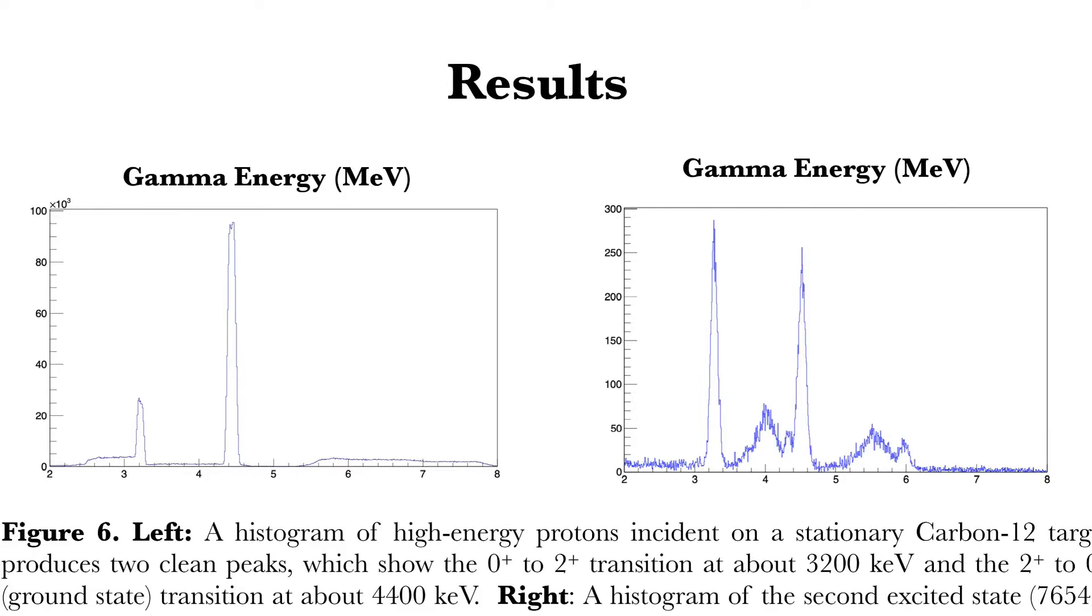As you can see, both graphs contain two peaks corresponding at around 4.4 and 3.3 MeV. These peaks are very good approximations of carbon's two lowest energy transitions and thus attest to the validity of our simulation.